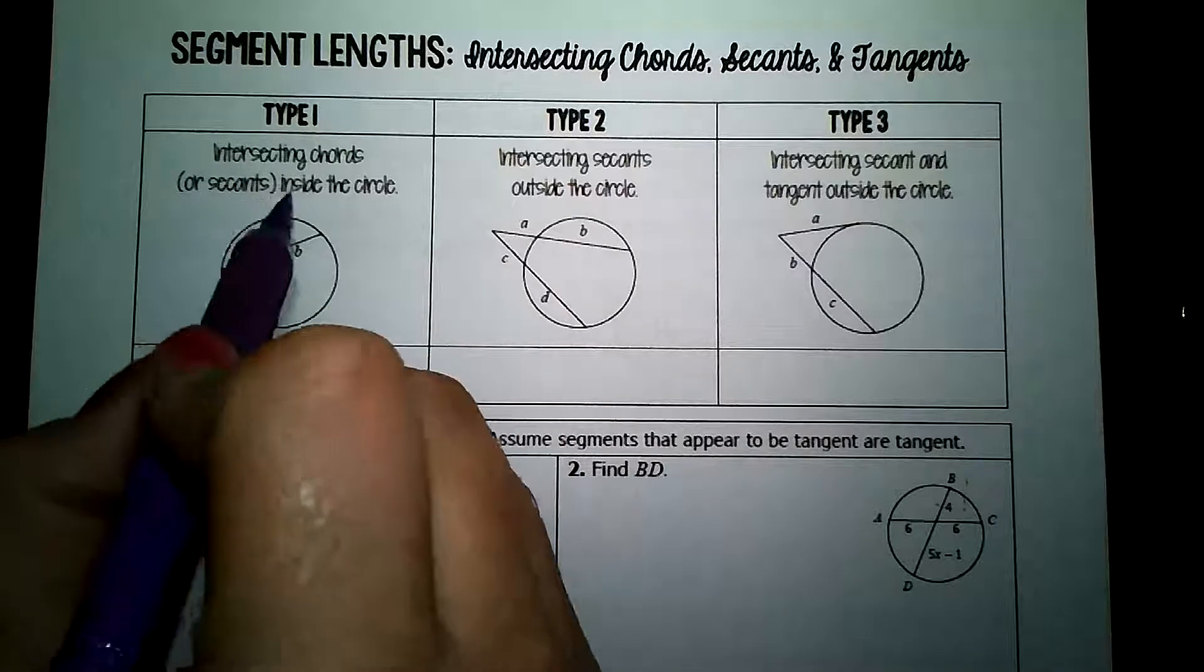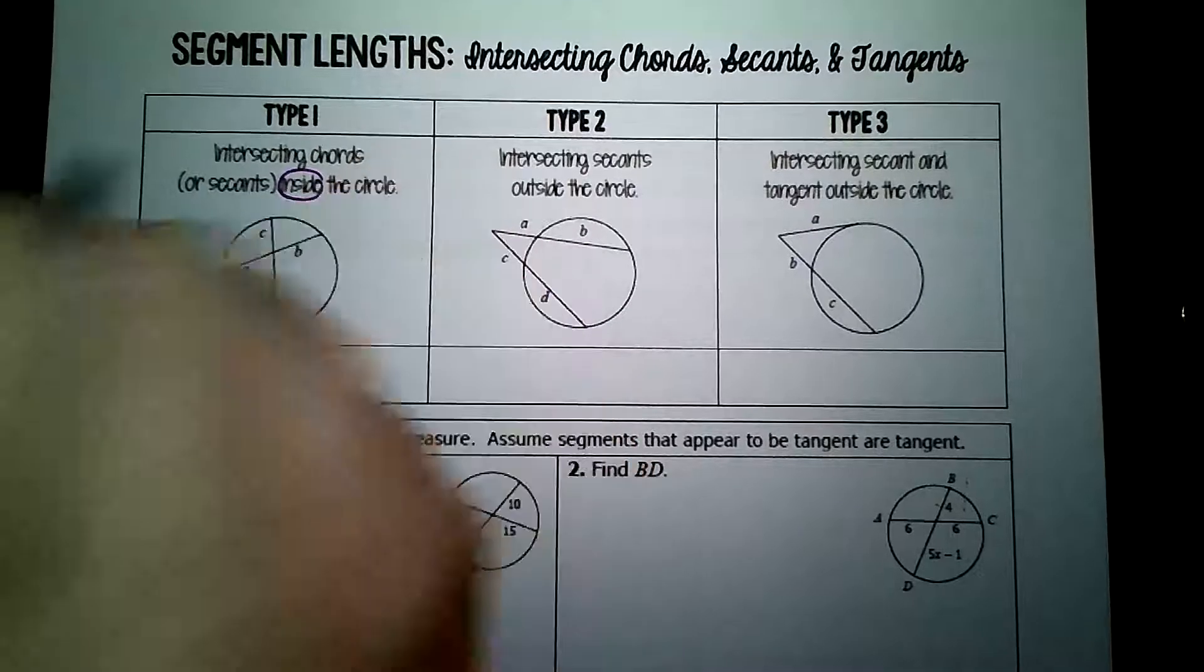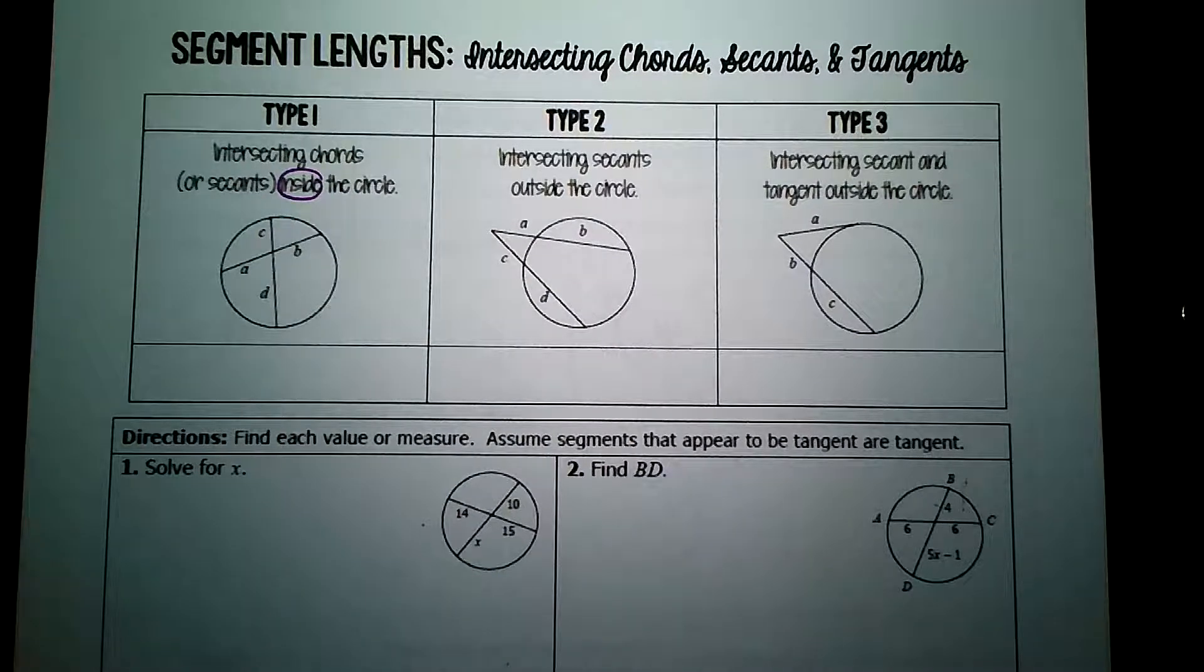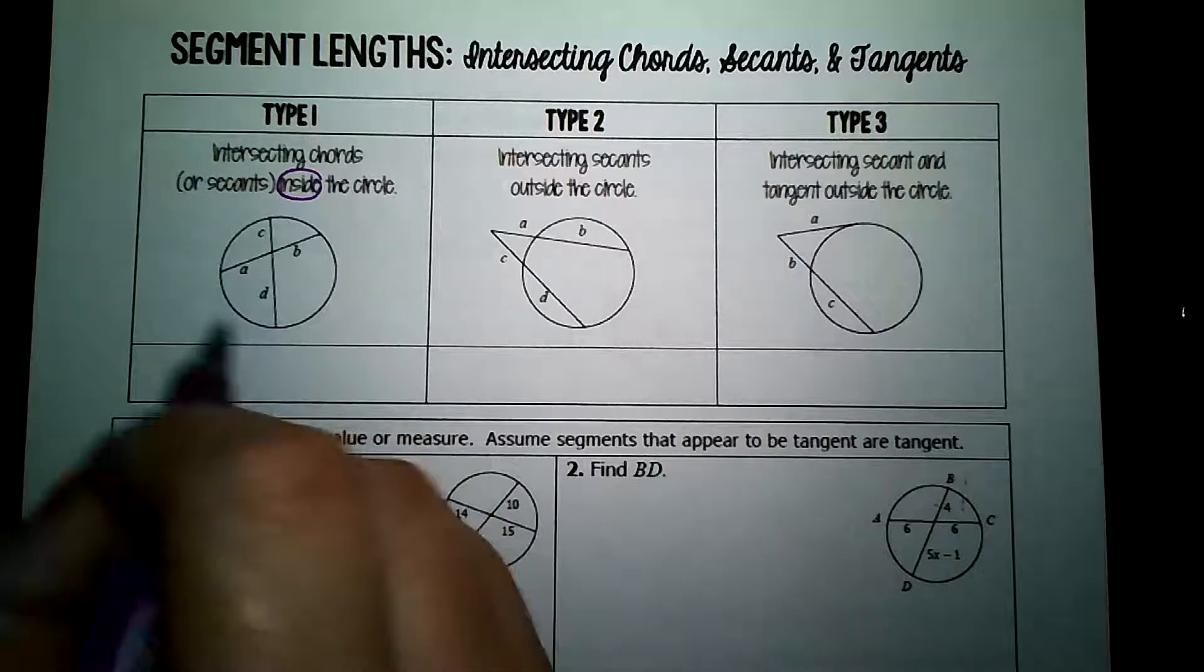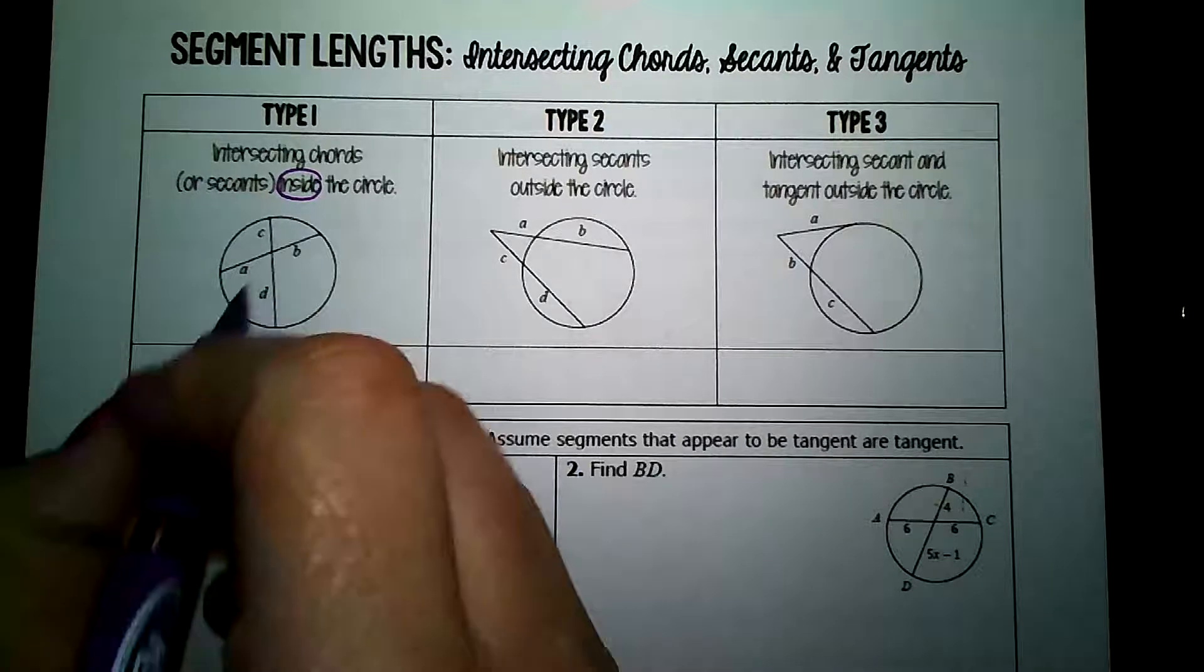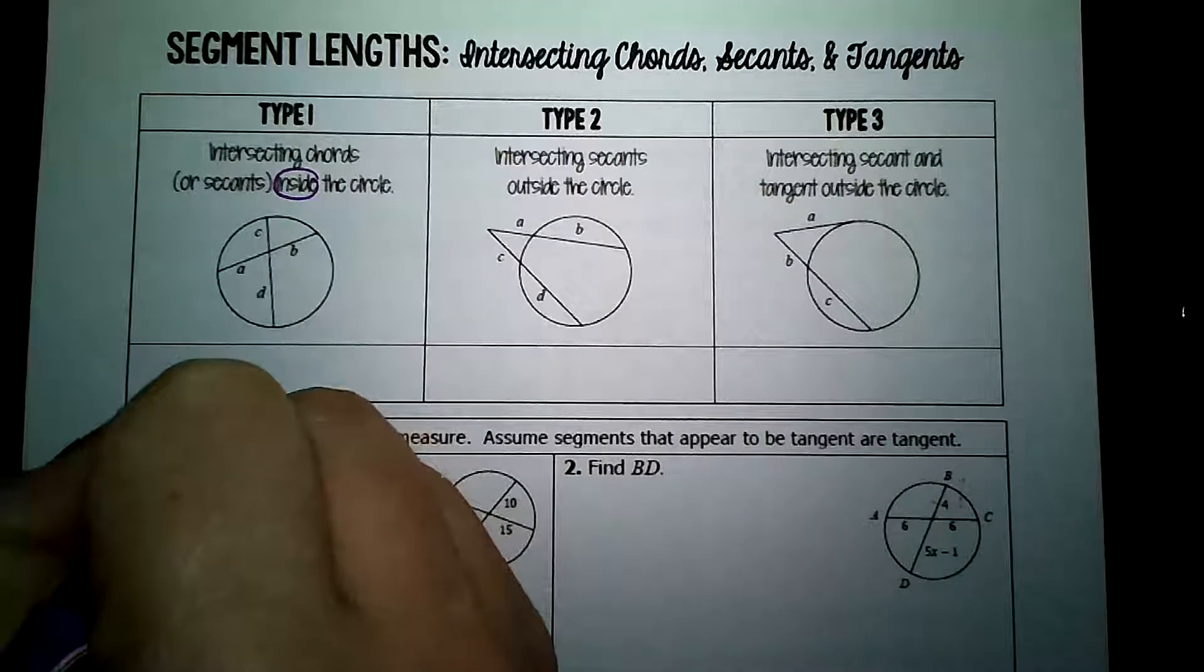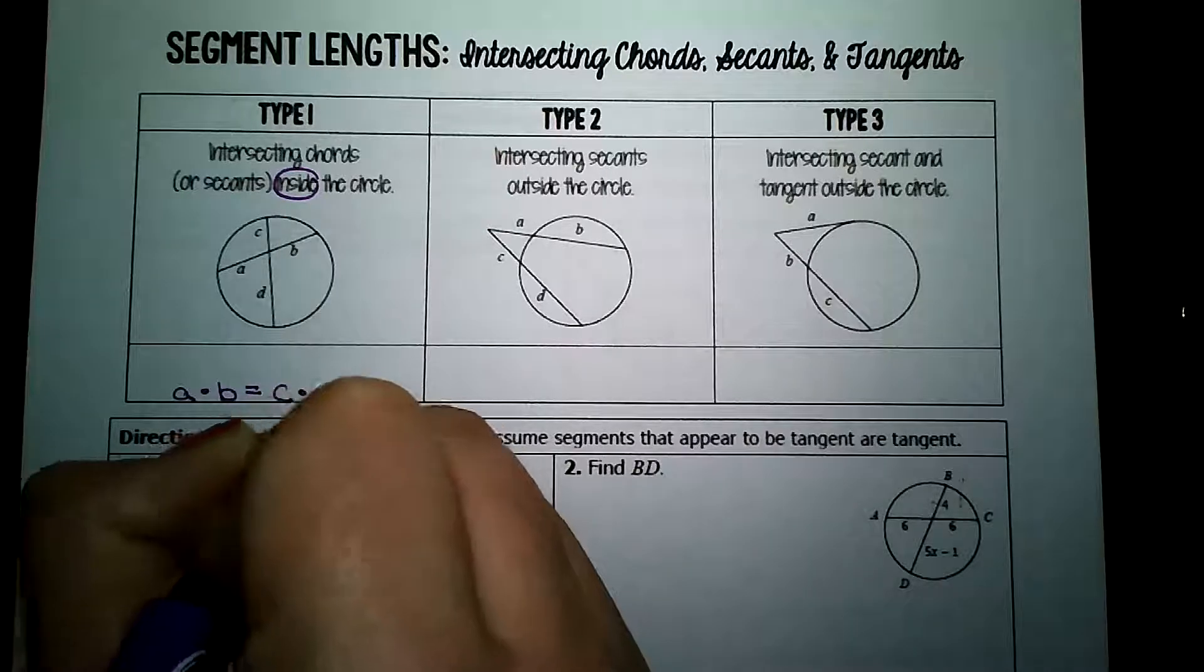These are called intersecting chords, and they are on the inside of the circle, which is a big deal. If it's inside of the circle, the formula goes, and I have it labeled here, the formula for this particular triangle would be A times B is equal to C times D.